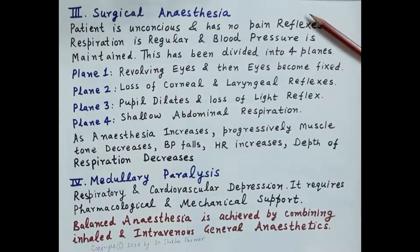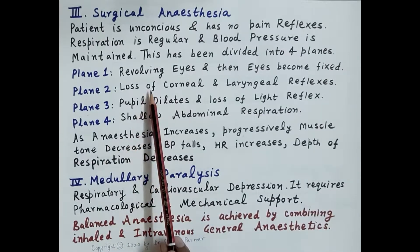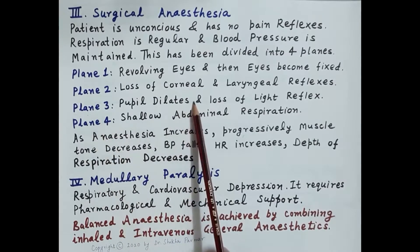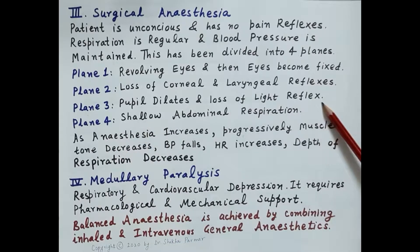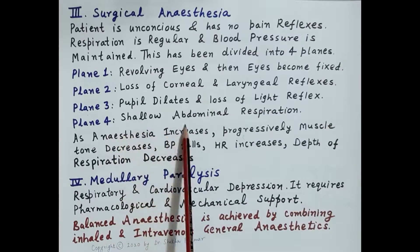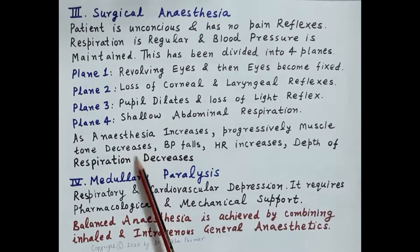The third stage is the stage of surgical anaesthesia. By the end of stage one there is induction of unconsciousness and analgesia. In stage three, surgeries are actually performed — the patient is unconscious and has no pain reflexes, respiration is regular, and blood pressure is maintained. This stage is divided into four planes: Plane one — eyes are initially moving then become fixed. Plane two — loss of corneal and laryngeal reflexes. Plane three — dilation of pupil and loss of all light reflexes. Plane four — shallow abdominal respiration. As anaesthesia increases there is progressive decrease in muscle tone, blood pressure falls, heart rate increases, and depth of respiration decreases.